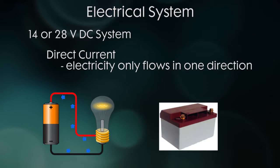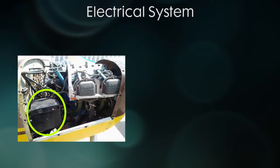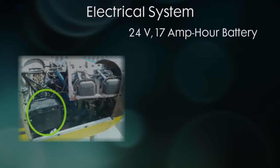Your airplane will have a battery that can provide a certain amount of current for a specific amount of time. For example, let's say that you have a 24 volt 17 amp hour battery. That means that the battery can provide 17 amps for one hour.